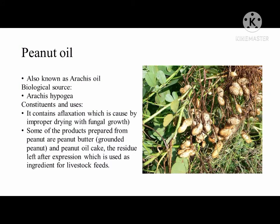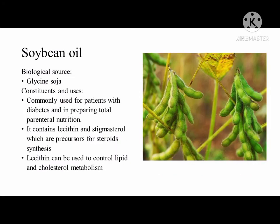Peanut oil, also known as Arachis oil, is another example of fixed oil derived from Arachis hypogea. It contains aflatoxin, which is caused by improper drying of peanut combined with fungal growth of Aspergillus flavus. Some products prepared from peanut are peanut butter, which is ground peanut, and peanut oil cake, the residue left after expression used as an ingredient in livestock feeds.